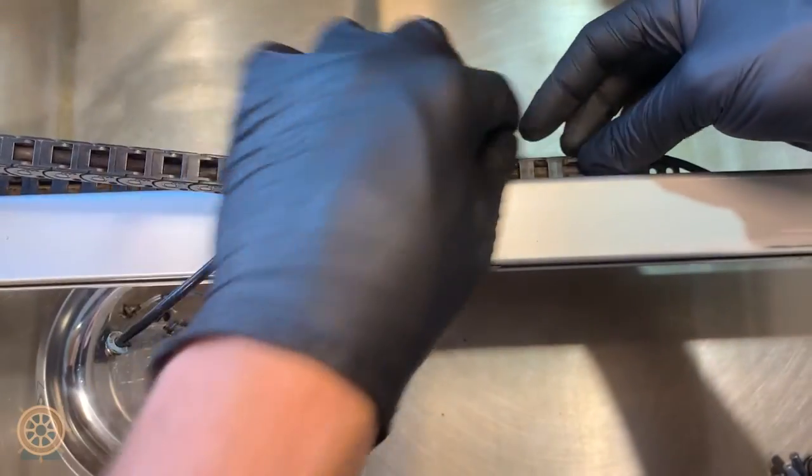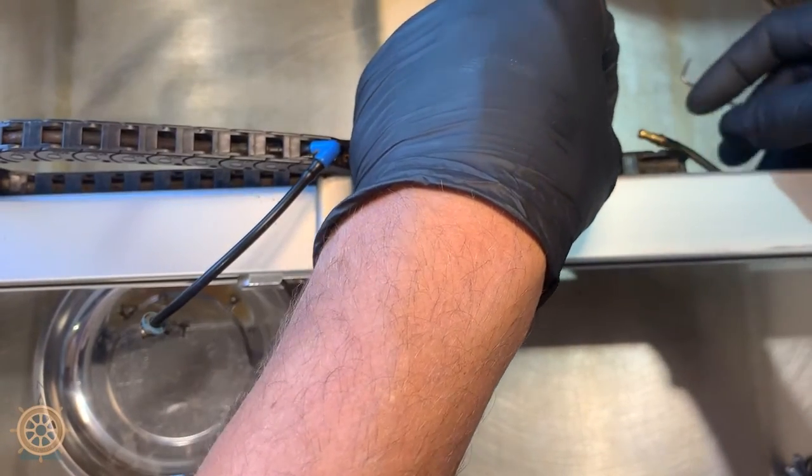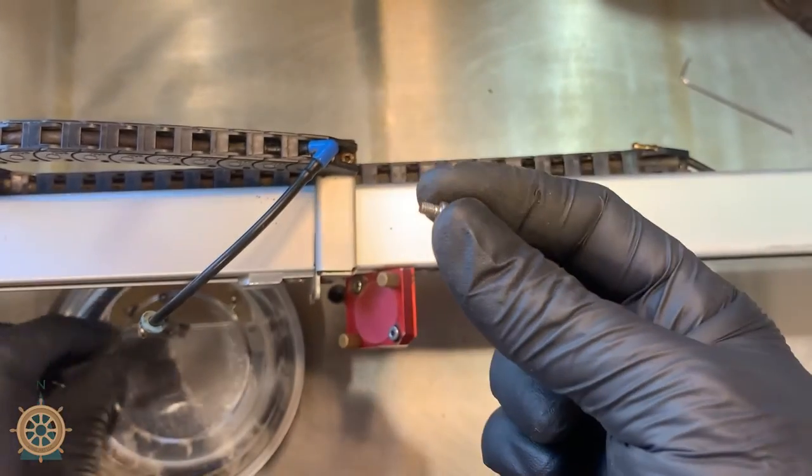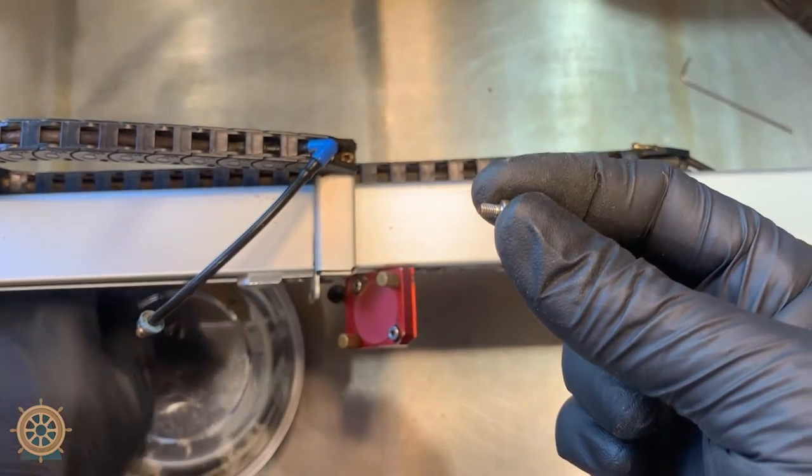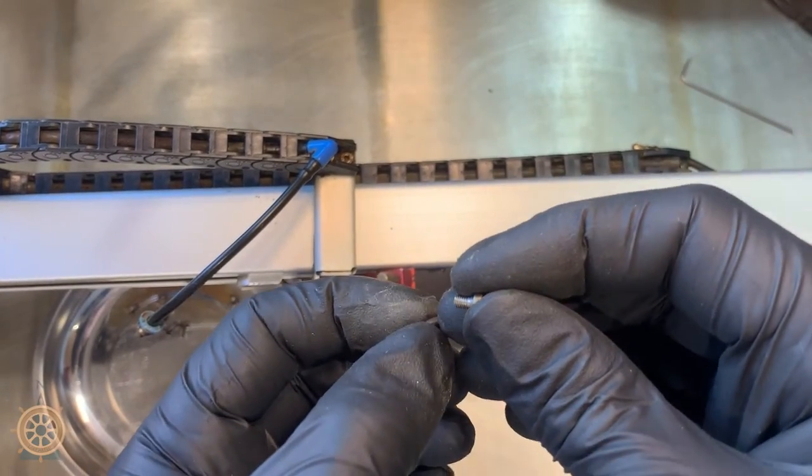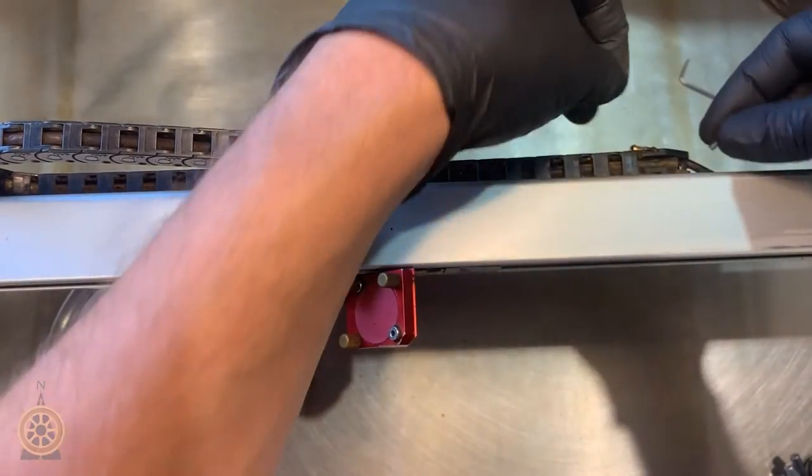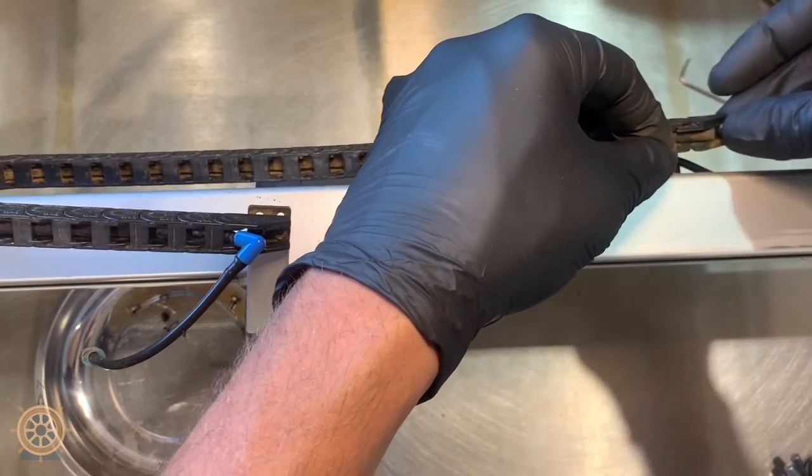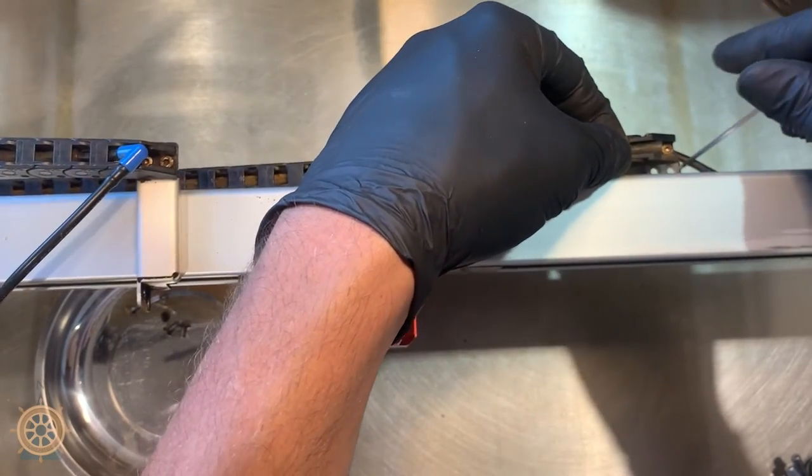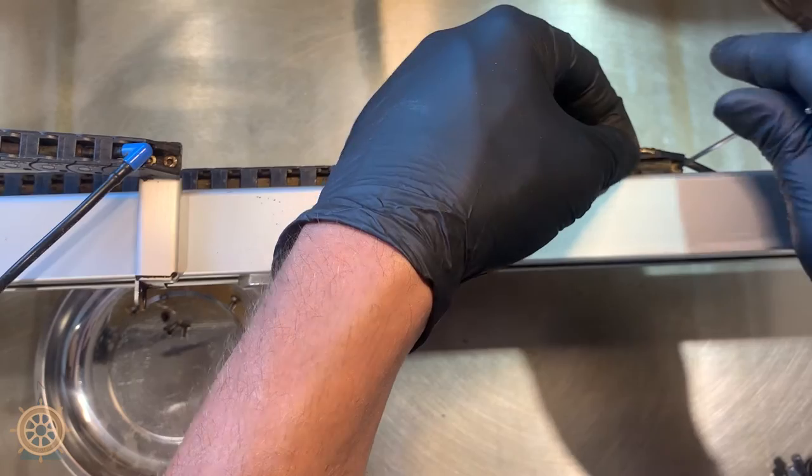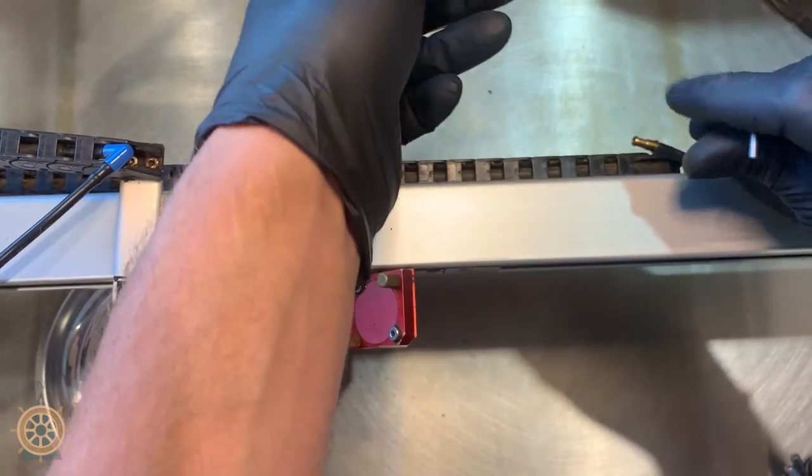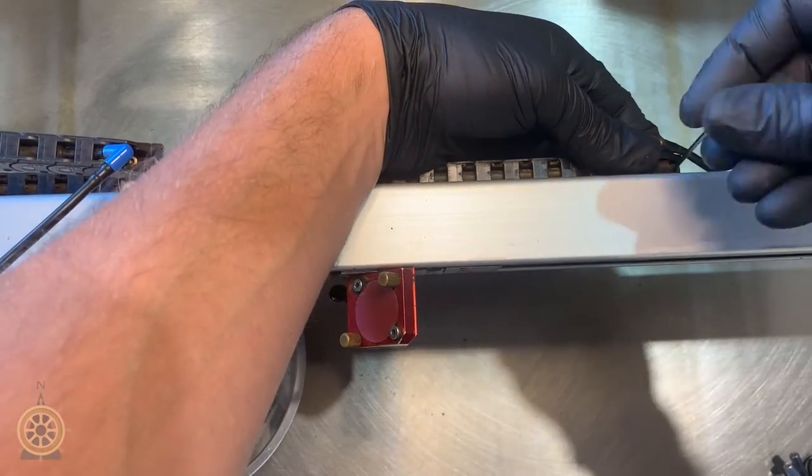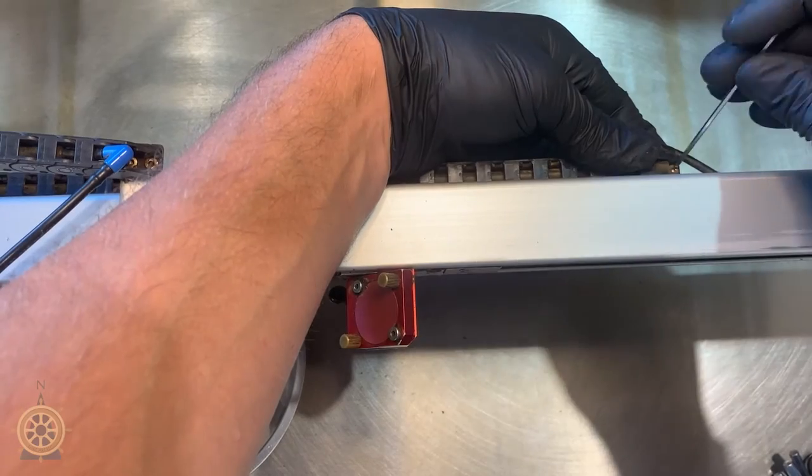Now to put it back on, basically the same thing. Take your screw, put your nut on your finger, push it down, get it through its hole, and then you can place the nut if you can feel it on the screw underneath. And then you just tighten it down.